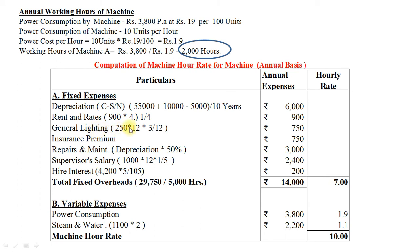General lighting: monthly Rs 250, multiplied by 12 months, multiplied by 3 light points divided by 12 light points — lighting for the machine amounts to Rs 750 per annum. Insurance premium: already given as Rs 750. Repairs and maintenance: 50% of depreciation; depreciation is Rs 6,000, so repair and maintenance amounts to Rs 3,000. Supervisor salary: monthly Rs 1,000 multiplied by 12 months, multiplied by 1/5 machines — supervisor salary per annum amounts to Rs 2,400.